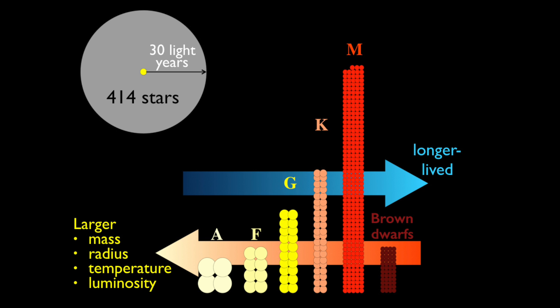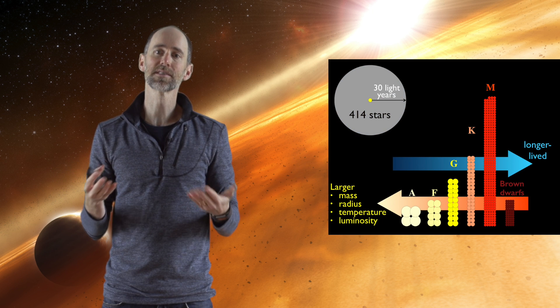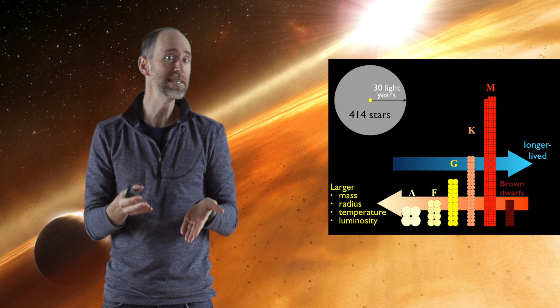To do this, the first step is to ask how common are Suns? So if we take a ball at 30 light-years in size around the Sun, there's about 400 stars within that ball. And this plot shows the distribution of the different types of stars. Now our Sun is a yellow star, a G star.